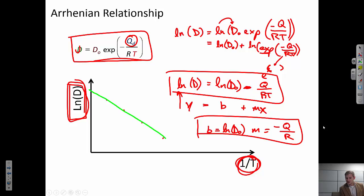And from that, I can come back, I can look at the intercept, and that will give me the log of the pre-exponential factor. And I can look at the slope, right? m equals the change in log of d, that's on my y-axis, over the change in 1 over T, that's on my x-axis. And that is going to be equal to minus q over r.